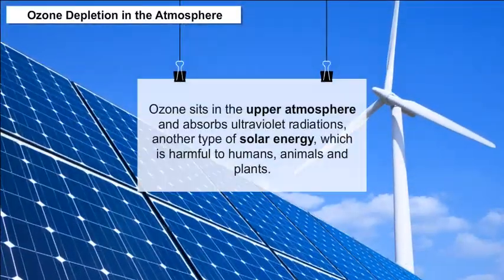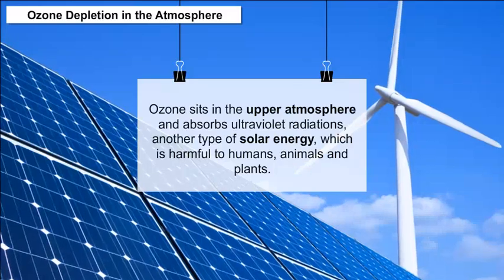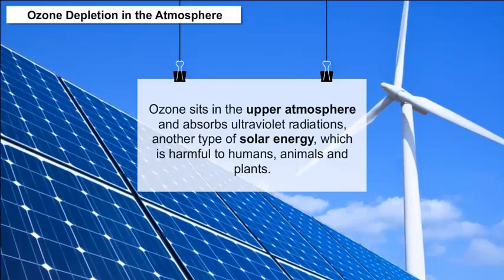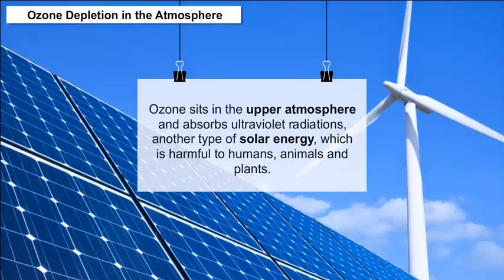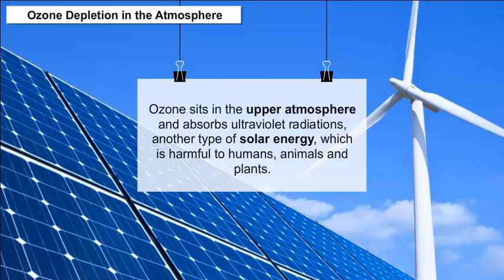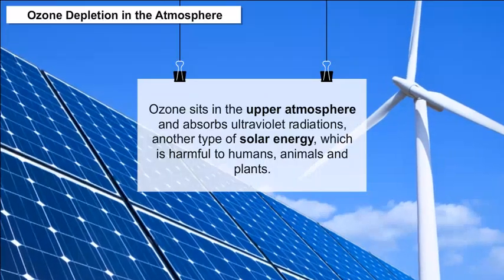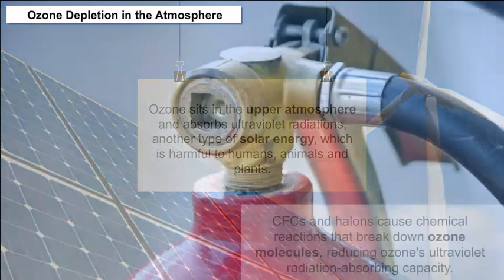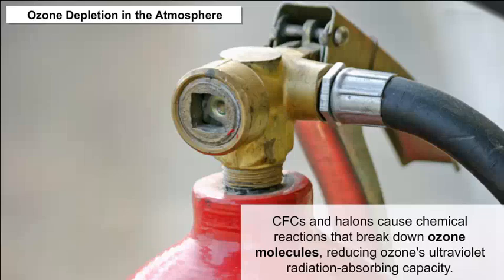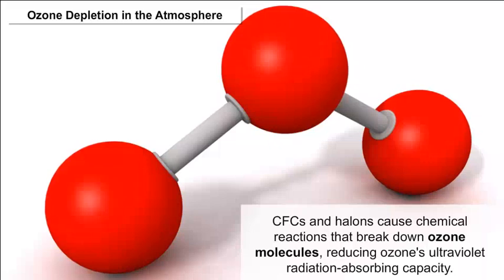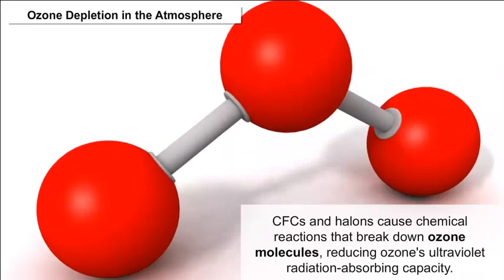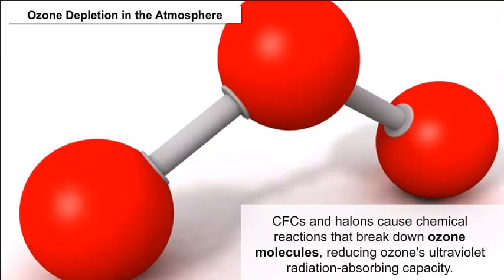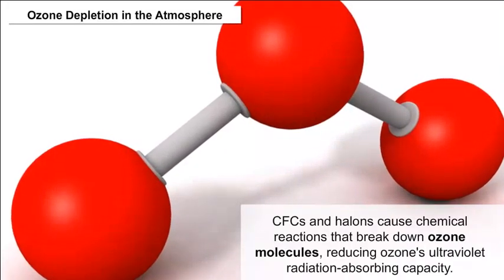Ozone sits in the upper atmosphere and absorbs ultraviolet radiation, a type of solar energy which is harmful to humans, animals, and plants. CFCs and halons cause chemical reactions that break down ozone molecules, reducing ozone's ultraviolet radiation-absorbing capacity.